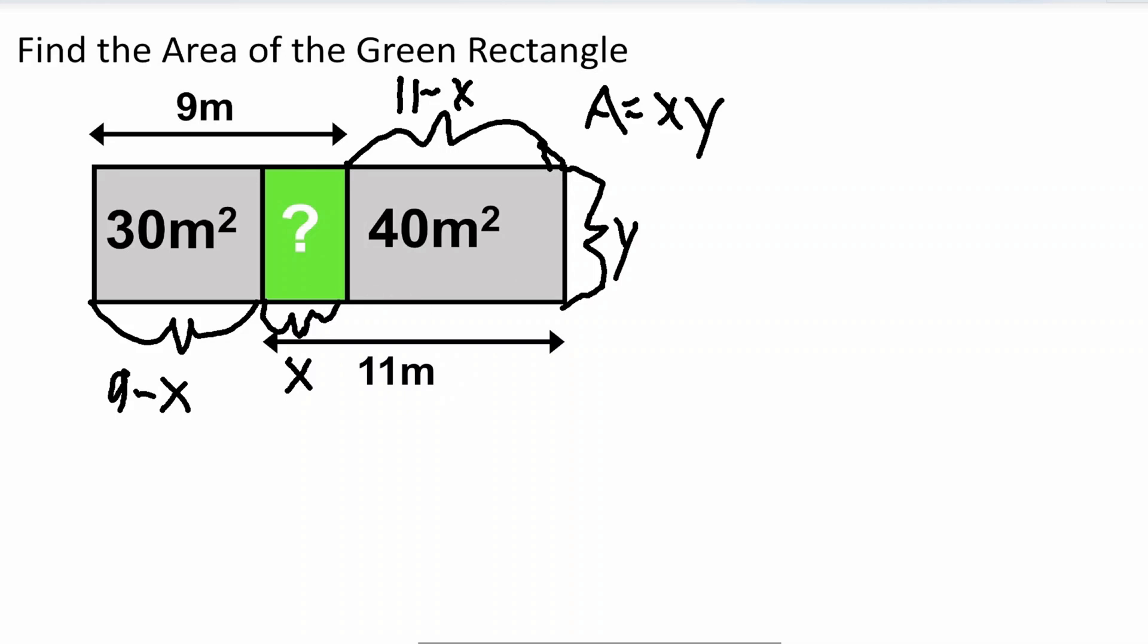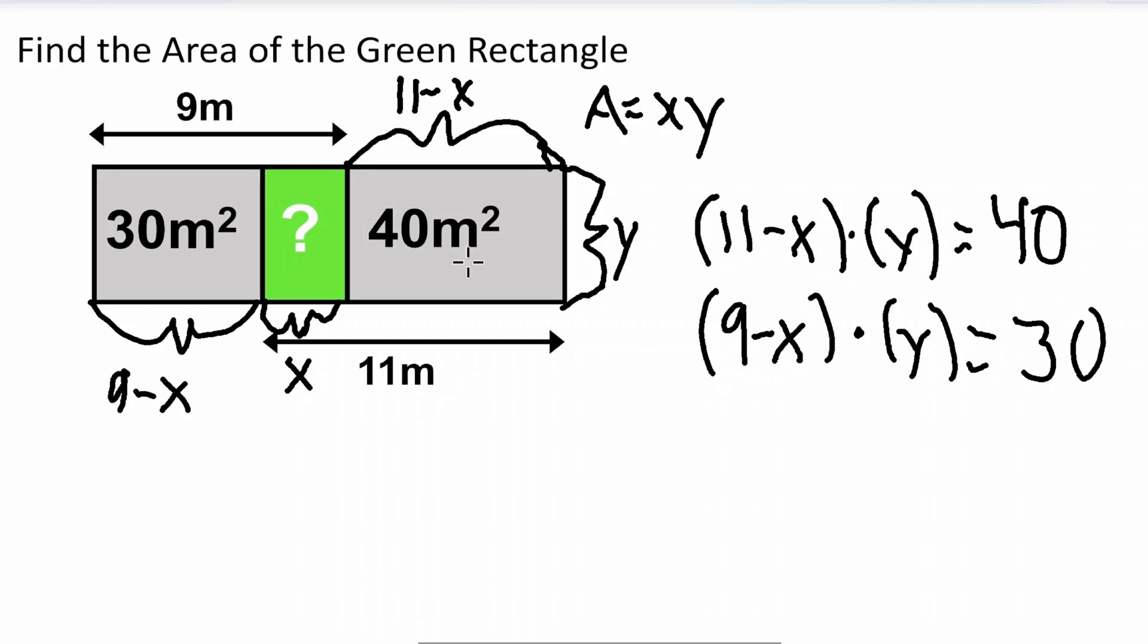So now let us write equations for these two boxes. We're going to have, let's start with the 40 meters squared first. For side length, 11 minus x, make sure to put it around parentheses because we're multiplying, times y is equal to 40, because the whole area is 40. And now for the second one, 9 minus x times y still, because it's the same. That length, side length is the same, is equal to 30. You can see here, so now we have these two equations.